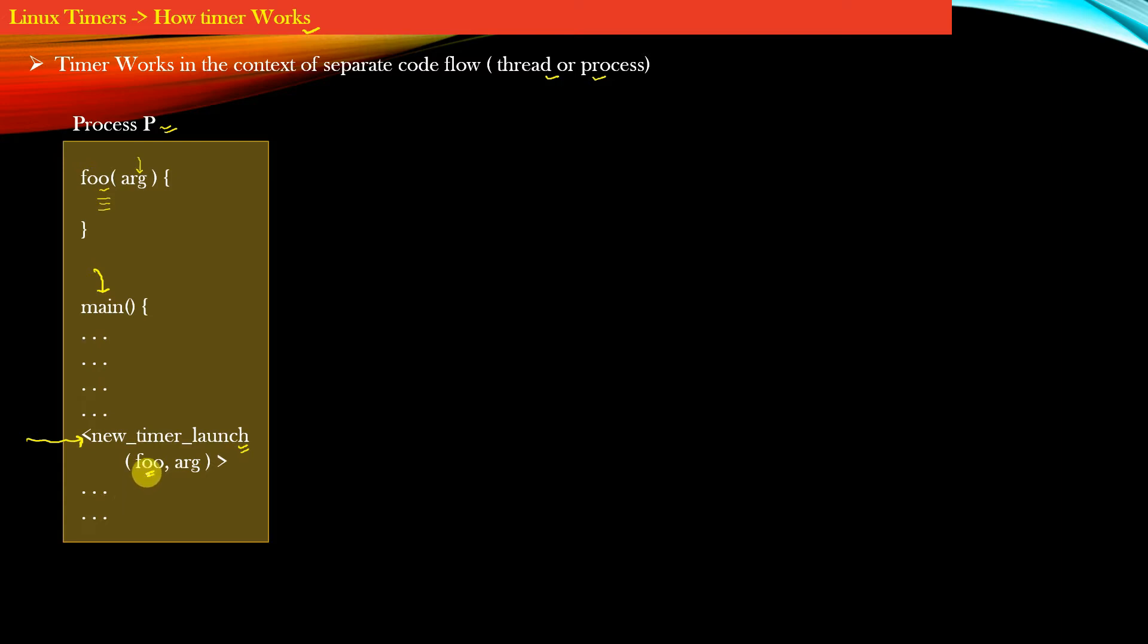So whenever we create a timer, one of the mandatory arguments that we need to pass is the function pointer. This function pointer represents a function which will be executed when your timer expires. And it is obvious that if you are invoking the function then you need to pass some argument to this function.